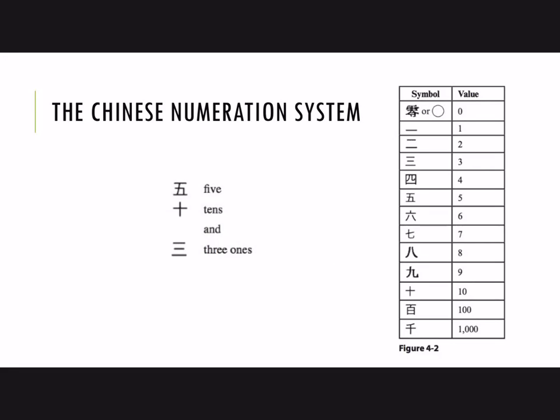Here's a historical example, the Chinese numeration system. So here's how they would write five tens and three ones, or in other words, the number 53. Now they wrote vertically, but the idea is the same. There's a symbol for five, then a symbol for ten, and that represents five tens, and then a three. That's the multiplier, but there's no number after it, so that's understood to mean ones.